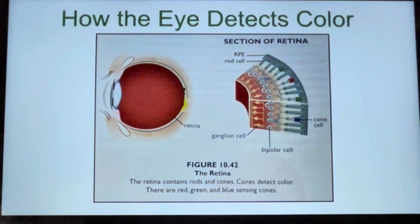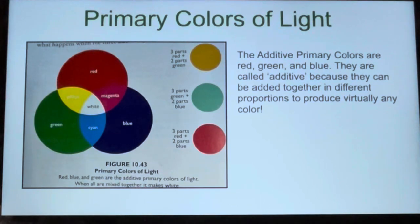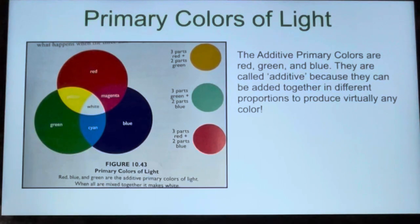Isn't it awesome how the eye is designed to handle such complex operations? Adding and Subtracting Colors. Your eyes can discern more than 16 million different colors. However, they only need three types of cone cells to do so. With cone cells that are sensitive to only three basic colors — red, green, and blue — your mind can construct a myriad of colors. These three colors are called the additive primary colors because they can be added together in different proportions to produce virtually any color.